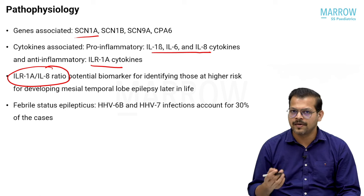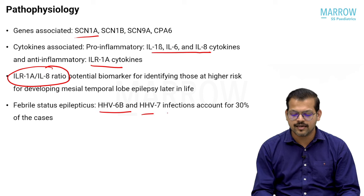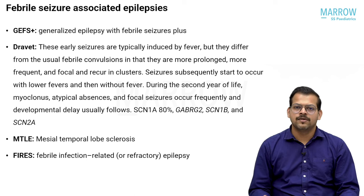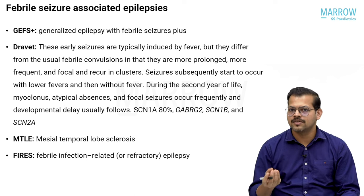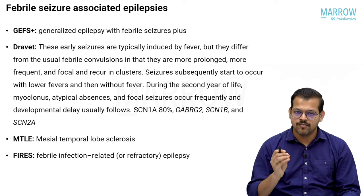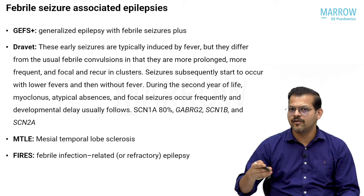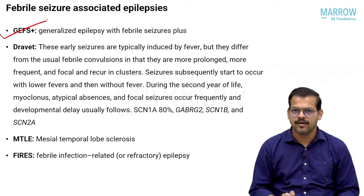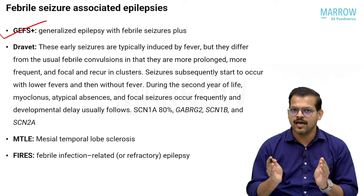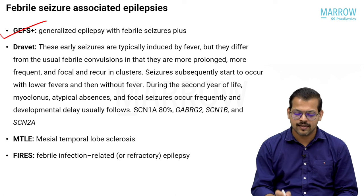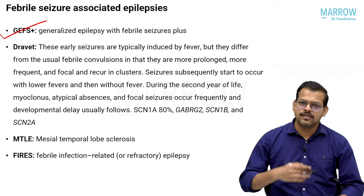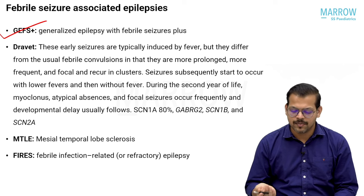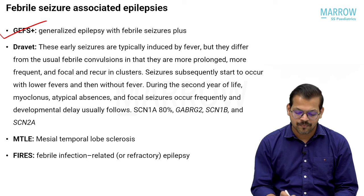HHV-6B and HHV-7 are viral infections particularly associated with febrile status epilepticus cases. Some epilepsy syndromes may initially present as febrile seizures — one is GEFS+ (Generalized Epilepsy with Febrile Seizures Plus). The typical age group is 6 months to 6 years, but in GEFS+ children, seizures with fever may continue beyond 6 years even though EEG, MRI, and cognition remain normal.